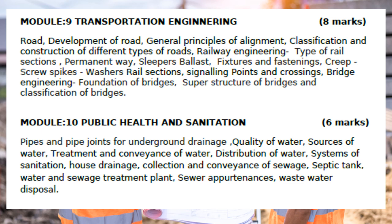Public health and sanitation includes: pipes and pipe joints of underground drainage, quality of water, sources of water, treatment and conveyance of water, distribution of water, system of sanitation, house drainage, collection and conveyance of sewage, septic tank, water and sewage treatment plant, sewer appurtenances, and waste water disposal.